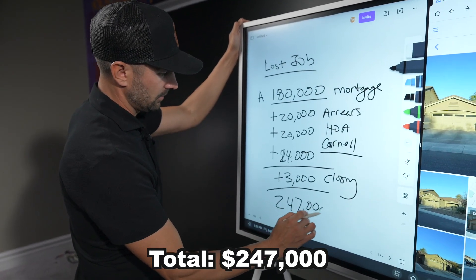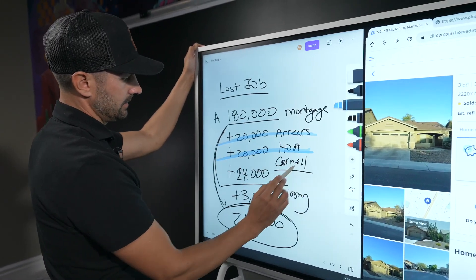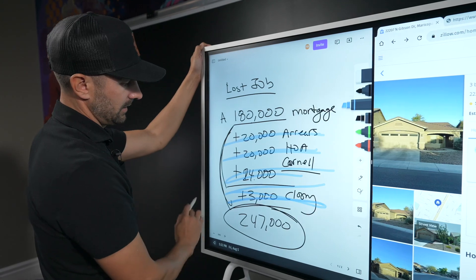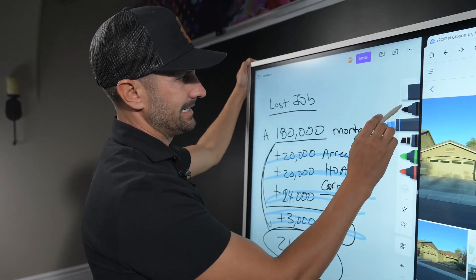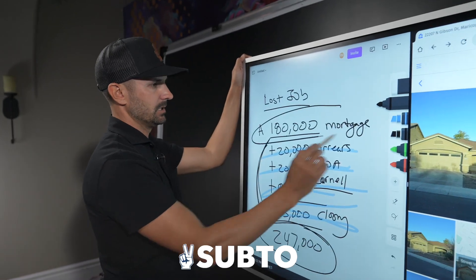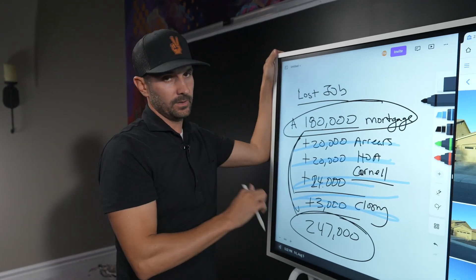This money I had to go and get. This money, this money, this money—this was money I had to bring to the table. This $180,000 I did not because I bought this subject-to. So I didn't have to come up with the money for that, which is nice.